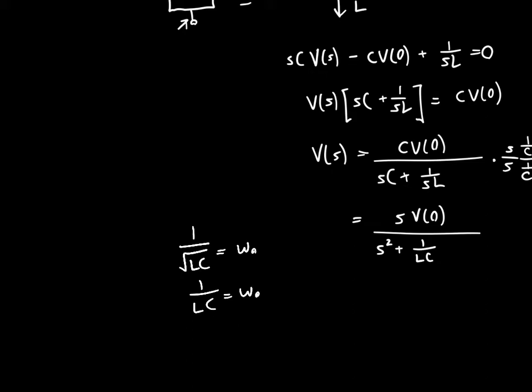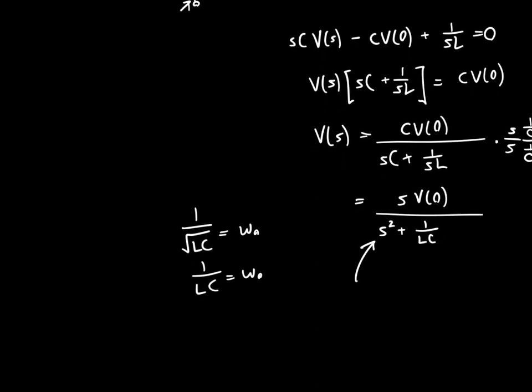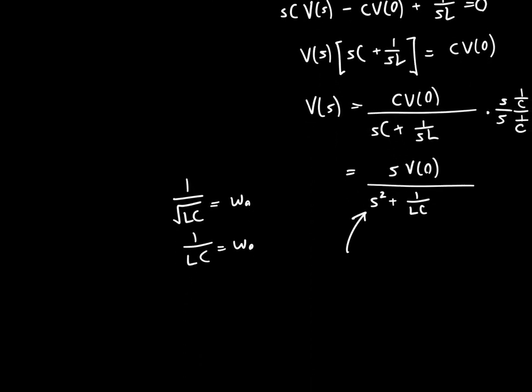If you look at this, you can either decompose it with partial fractions then use the Laplace transform of the exponential, or you can just recognize that this is the Laplace transform of cosine. So v(t) is just equal to V₀—and I'm going to replace v(0) with V₀ just to make it more convenient—V₀ times cosine of ω₀t. Beautiful.